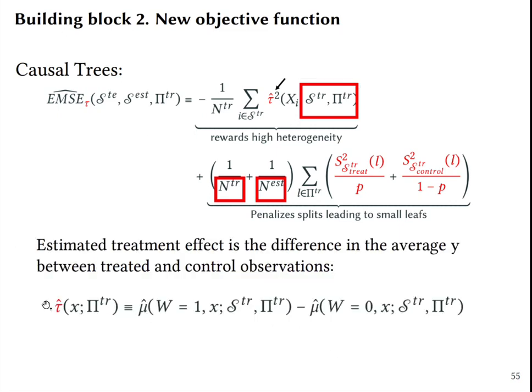And finally, the treatment effects for each leaf can be estimated simply as the difference between the average outcome for the treated minus the average outcome for the control group in each leaf.